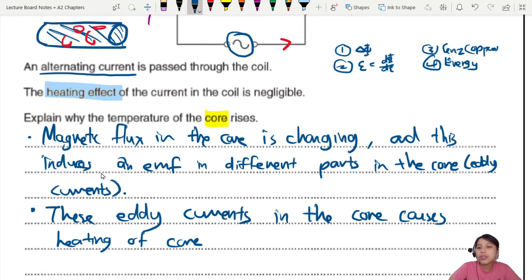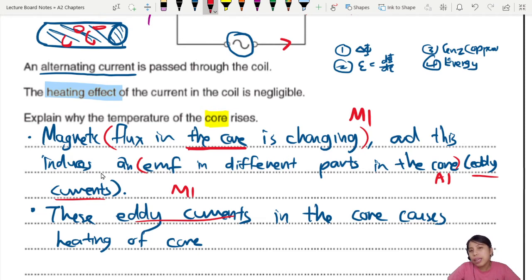So four marks. Where do these come from? Number one, you talk about the flux in the core changing. Flux in the core. I don't say flux in the air. Flux in the core. You're talking about the core. So you have to refer to flux in the core is changing. M1. Got flux change means got what? EMF. So induce EMF in the core. And if you mention eddy currents because of this EMF, then that will be your next part. That'll be M1. Why got eddy current? What does the eddy current do? Cause heating. So you say heating. Eddy current causes heating. That's the last part. A1. One, two, three, four.